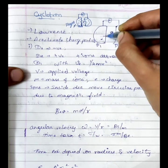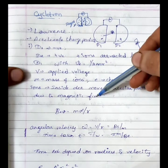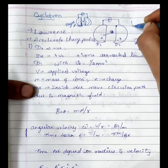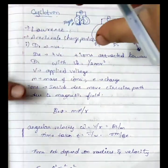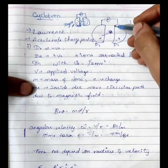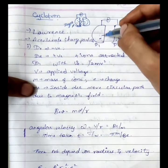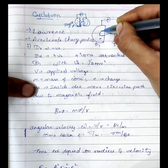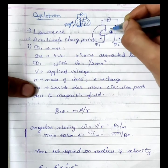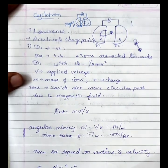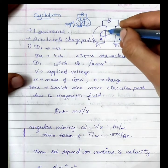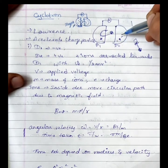The whole setup is placed in a magnetic field. The magnetic field is perpendicular to the plane of motion. The charged particles experience circular motion as they travel through the Ds. The oscillating frequency is set in phase so that the polarity will change.